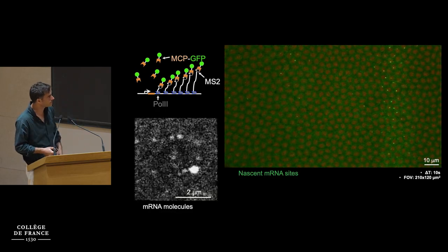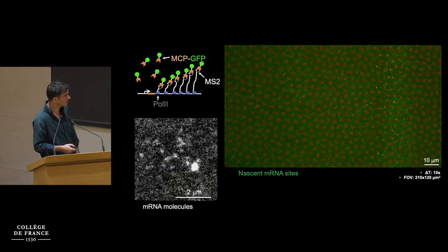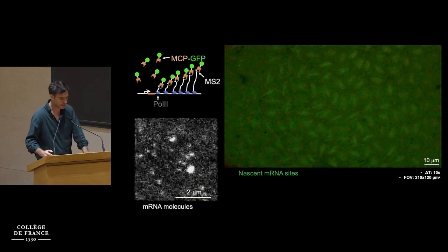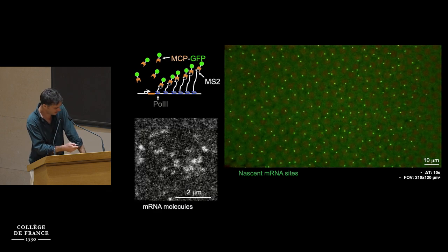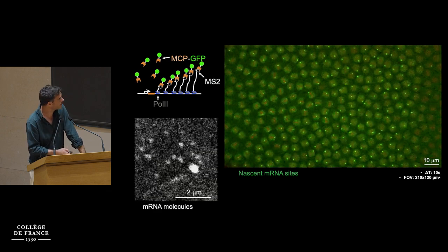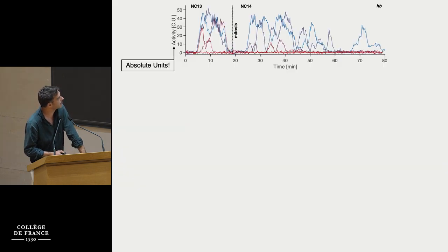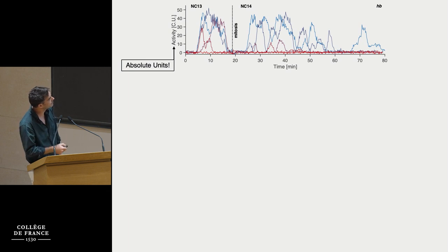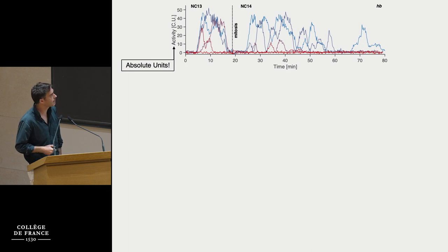Everything happens in the fly embryo, and you get a lot of statistics for free — hundreds of alleles measured at once. Here you see six individual alleles: activity as a function of time with very pronounced bursts. One allele is actually silent in red — this gives roughly the noise background, which is almost none. This is shown in two different cell cycles, cell cycles 13 and 14, for a gene called hunchback. Activity is in absolute units, which is important if you eventually want to do math on the system.